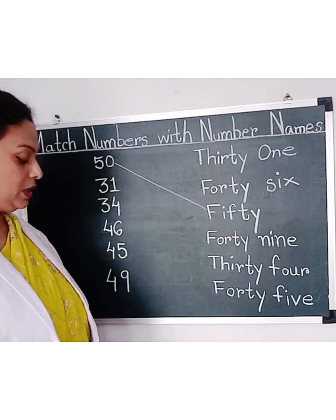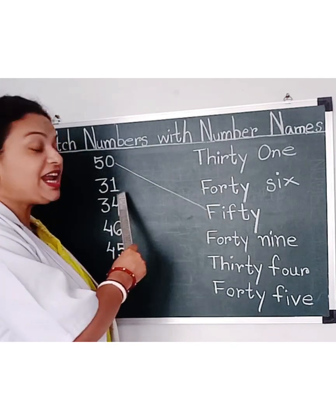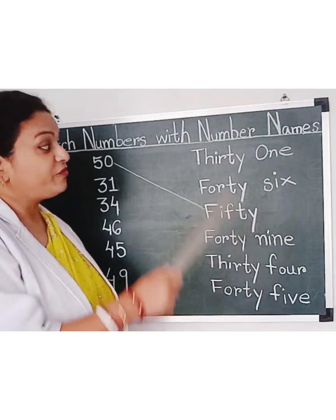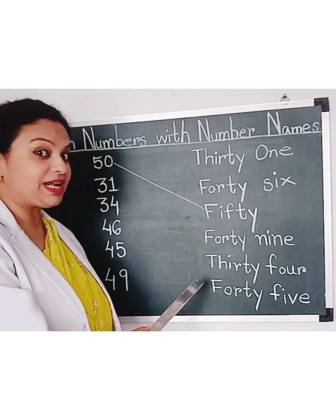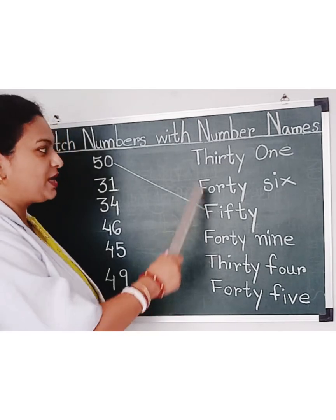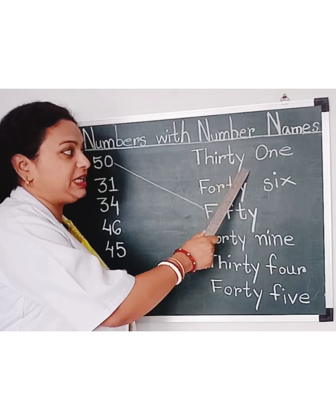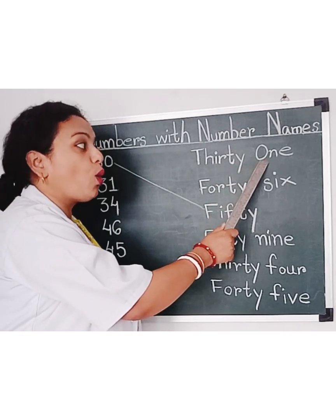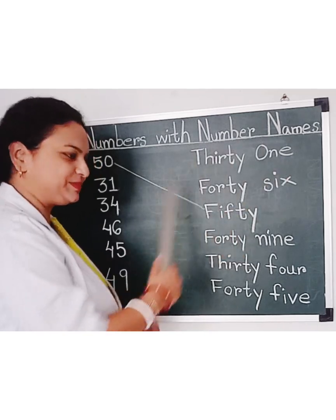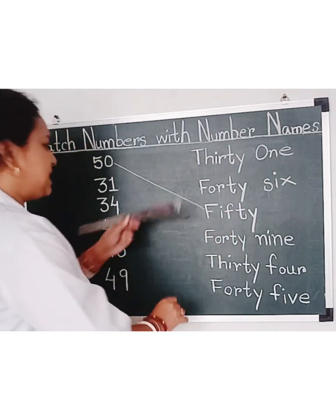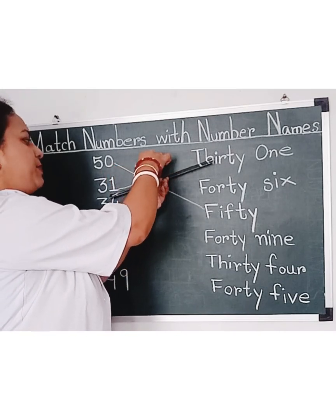Now, let's see the next number. 31. Where is the number name for 31? Let's find out. Here it is — T, H, I, R, T, Y — Thirty; O, N, E — One. Thirty-One, 31. Let's match it.